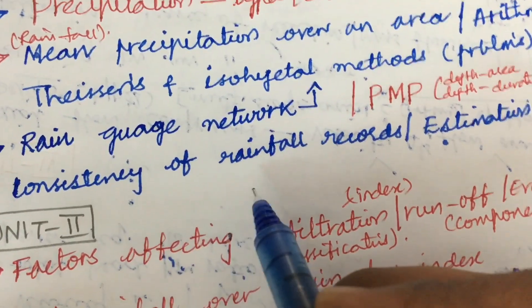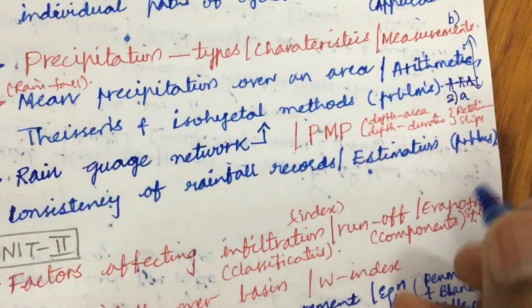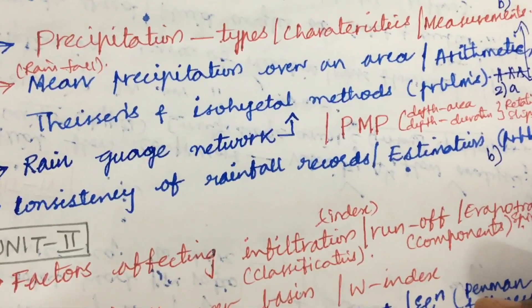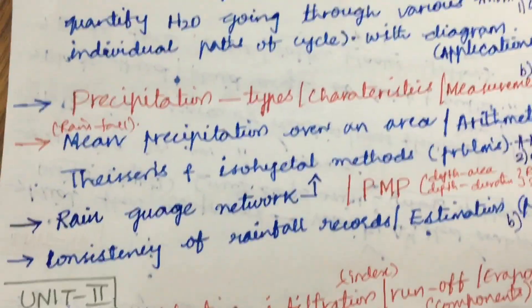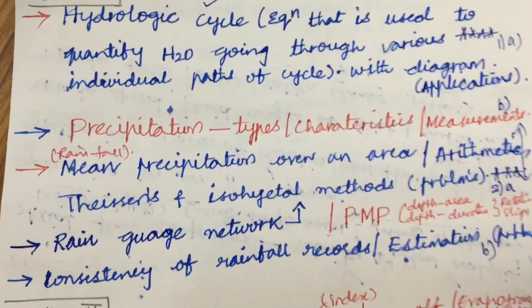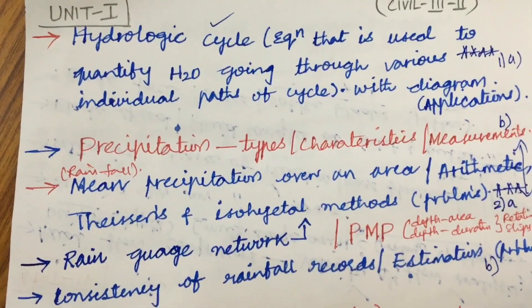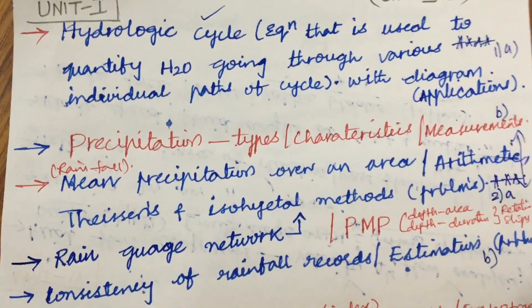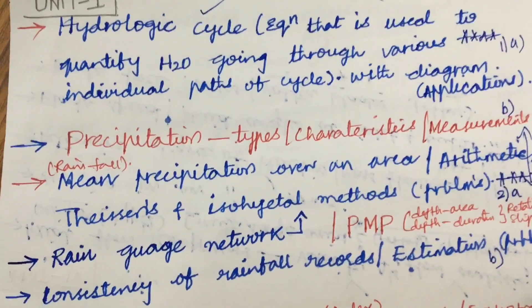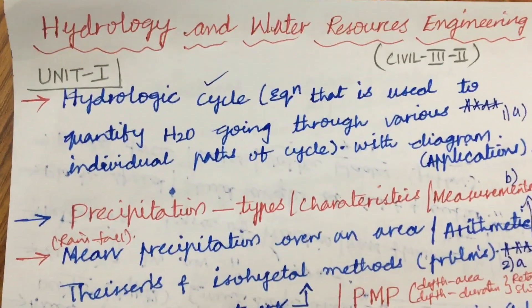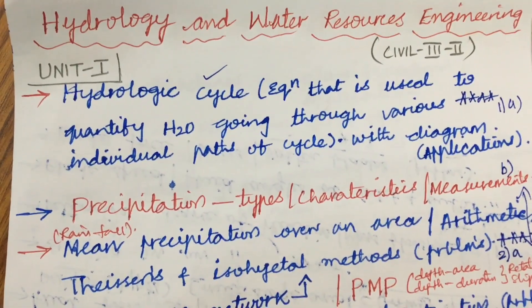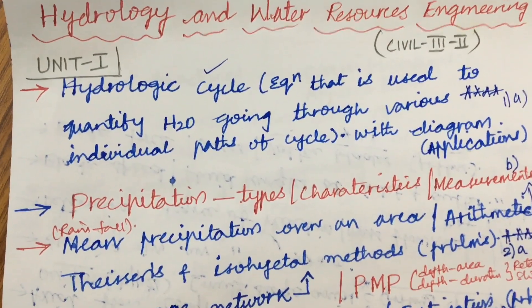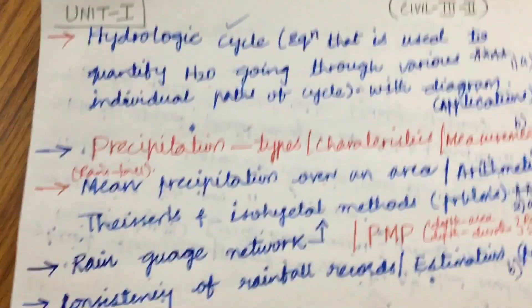Consistency of rainfall records and its estimation may be the 2b question. Do not expect a direct 15-mark question. It is a split of A-B combination — 8 and 7, or 10 and 5 — and make sure that the course Hydrology and Water Resource Engineering is not only theory; it is all about derivations as well as problems.